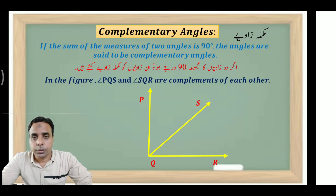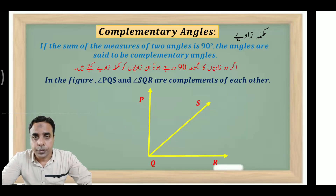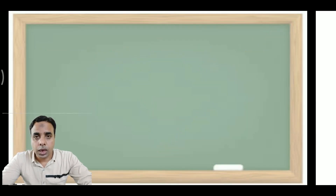Aapko maloom hai kaima zawiyya jo hota hai toh uska majmuaa, uski paimaish ka jo majmuaa hota hai woh kitna hota hai? We call it a right angle. So this figure you have observed — angle ABC is a right angle.